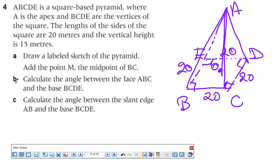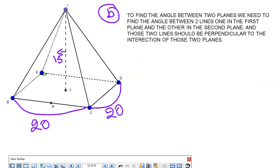Part B and C are a little bit tricky. Calculate the angle between the face ABC and the base BCDE. Here there is a property you need to know before you start to solve. To find the angle between two planes - we call BCDE a plane or face, and ABC is a plane.